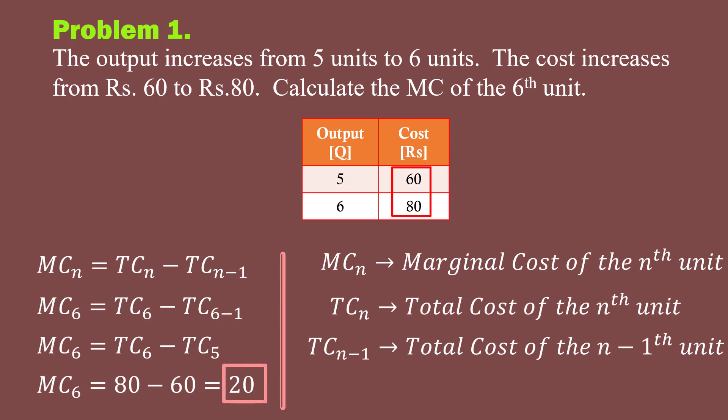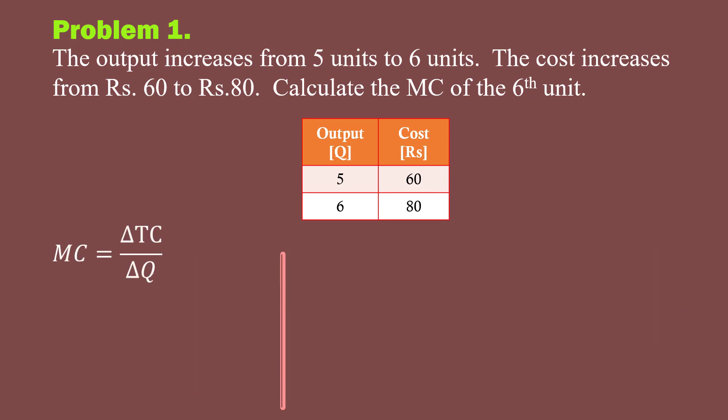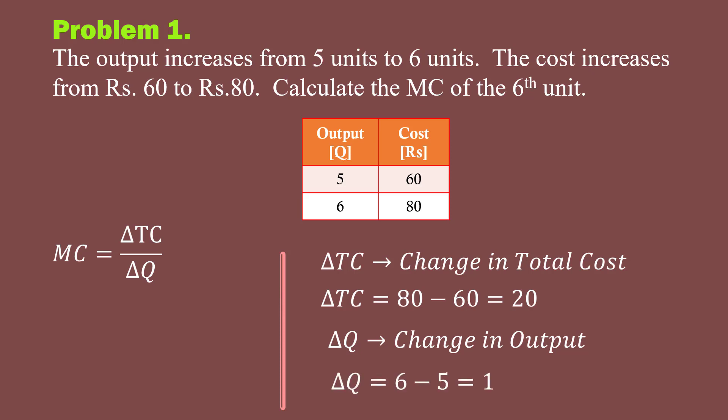Marginal cost of the 6th unit is 20 rupees. We shall use the formula marginal cost equals delta TC over delta Q. You know, delta TC represents change in total cost. In our case, change in total cost is 80 minus 60, which is 20. Delta Q stands for change in output. In our case, change in output is 6 minus 5, which is 1.